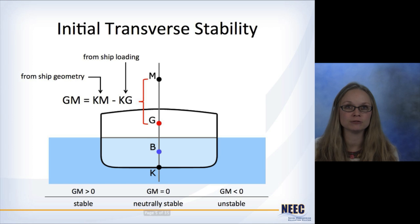KM we get from ship geometry and KG we get from ship loading. If GM is positive, then the ship is stable. If GM is zero, then the ship is neutrally stable. And if GM is negative, then the ship is unstable.